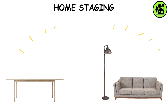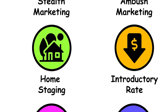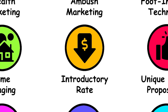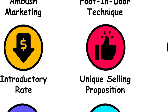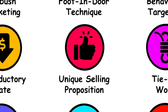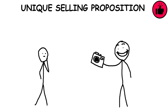Introductory Rate: An initial low interest rate on a loan, which expires, leading to a regular or higher rate. Unique Selling Proposition: Informing customers about a product's superiority compared to competitors by stating something that it has and that the others don't.